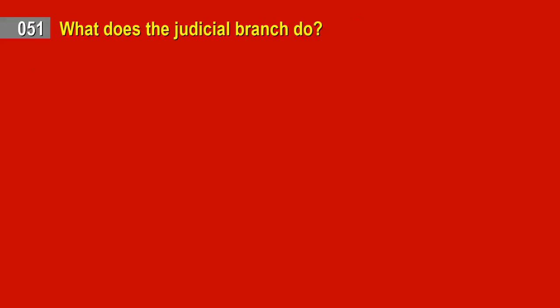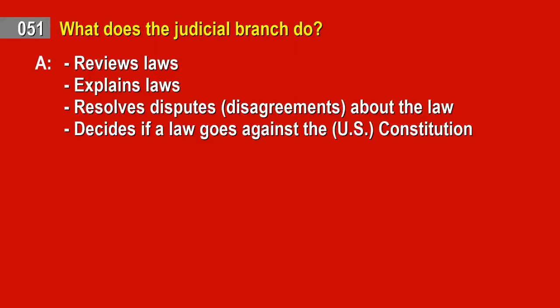Question 51. What does the Judicial Branch do? Answer: Reviews laws. Explains laws. Resolves disputes and disagreements about the law. Decides if a law goes against the U.S. Constitution.